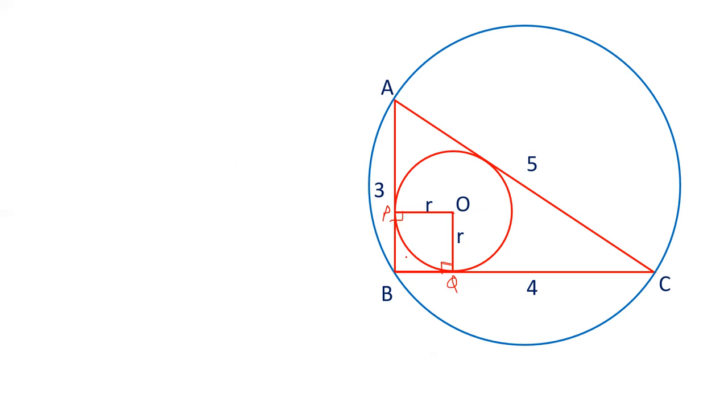The first method. This angle is 90 degrees. So this is a square O, P, B, Q is a square, and this side is r, this side is r.